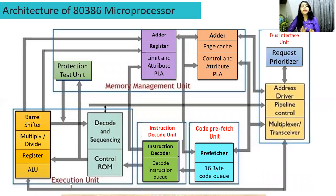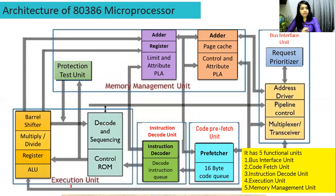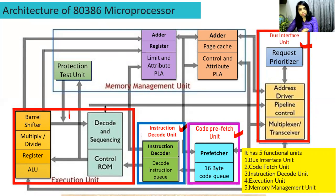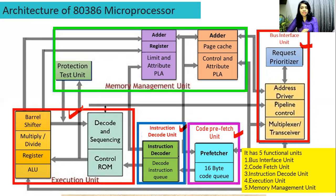This is the block diagram of the 80386 microprocessor. It is divided into different blocks with five functional units: the bus interface unit, code prefetch unit, instruction decode unit, execution unit, and memory management unit. Let's learn all the units one by one in detail.